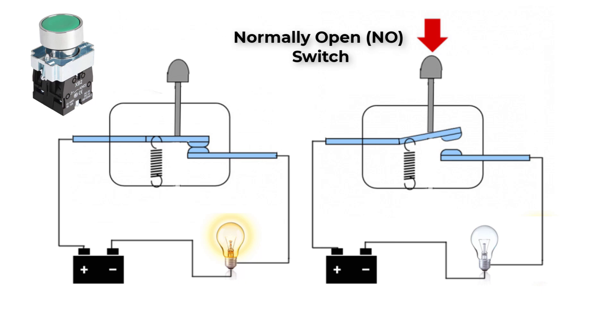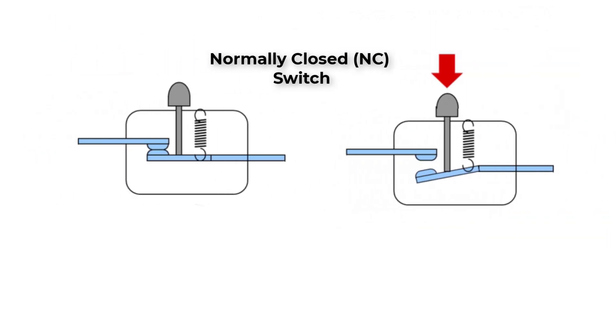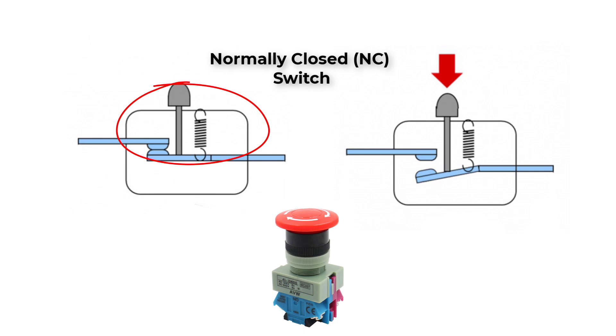An example for a normally closed switch is stop switch. Here, the switch is closed in the normal operation. When we press the switch, it will be opened and will open the circuit.